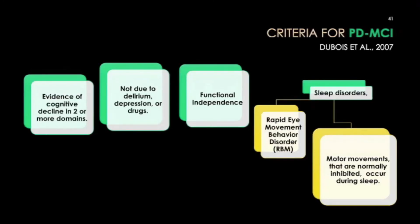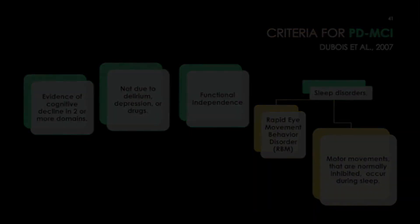The criteria for diagnosing Parkinson's disease MCI are listed on this slide. The individual must have evidence of cognitive decline in two or more domains, not due to delirium, depression, drugs, or motor function. The individual must have functional independence — able to perform basic activities of daily living, though likely slowly and with some difficulty in instrumental activities of daily living. Sleep disorders are very common early: motor movements normally inhibited in healthy individuals occur during sleep, and rapid eye movement behavior disorder is often seen — an unusual disorder in which the individual during sleep appears to be acting out a dream sequence, flailing their arms, getting out of bed, or yelling and screaming during REM sleep.